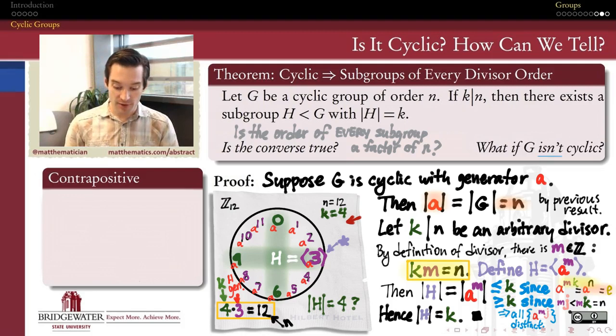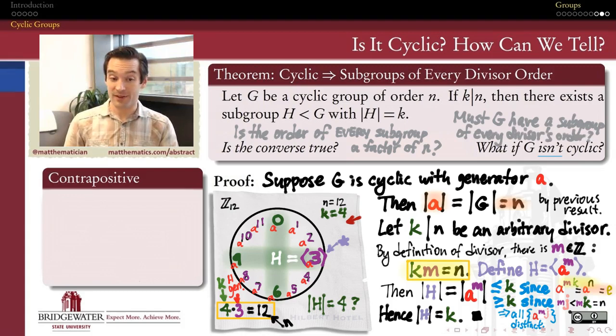We might also ask the question, how important was it in this theorem that G be a cyclic group? What if G were not a cyclic group? What if it were maybe some other abelian group that's not cyclic? What if it were some non-abelian group? Can we still make the claim that the order of a subgroup has to be a divisor of the order of the full group? Must G always have a subgroup of every divisor's order in the case where G is not cyclic? That's another question that we're not going to answer in this video.